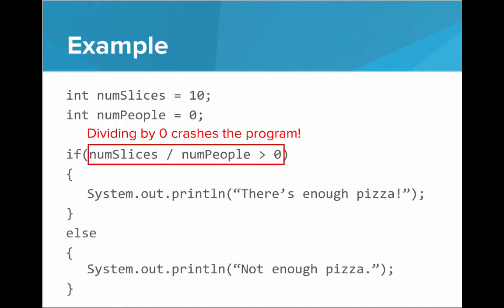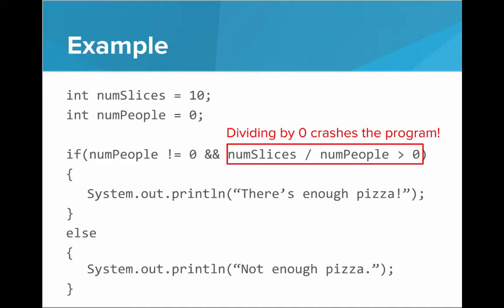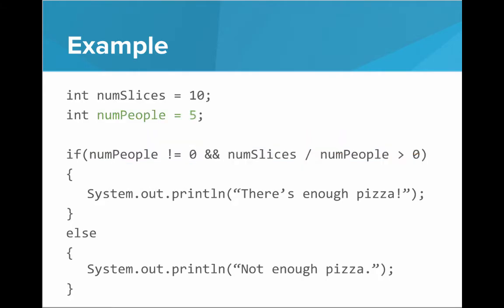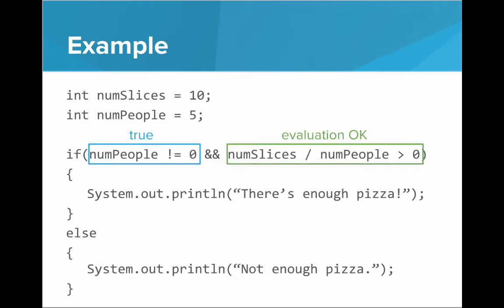To prevent this, we can use short circuiting. Before the second Boolean expression, we'll put in a first Boolean expression to check that numPeople is not equal to zero. If numPeople is not equal to zero, and numSlices divided by numPeople is greater than zero, then we're okay. If this first expression evaluates to false, the second one won't even be looked at — so we will never divide by zero. If numPeople is not zero, the first part evaluates to true, and we do evaluate the second part, but that's okay because numPeople isn't zero.